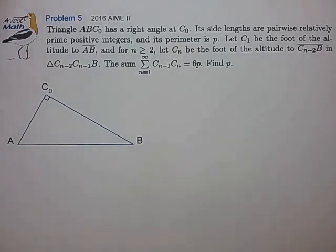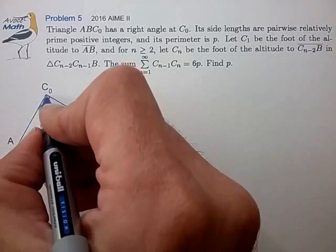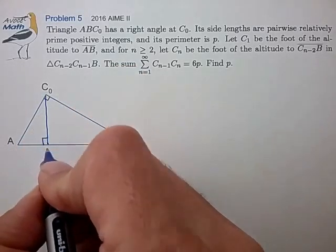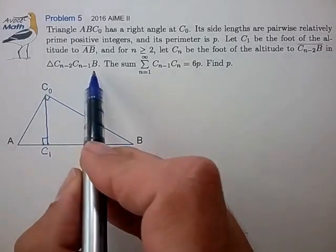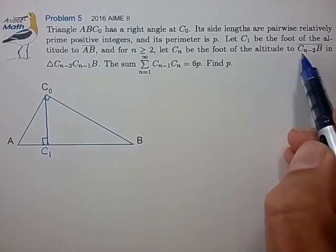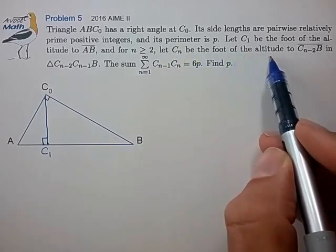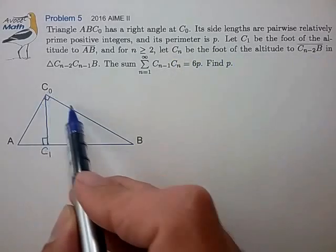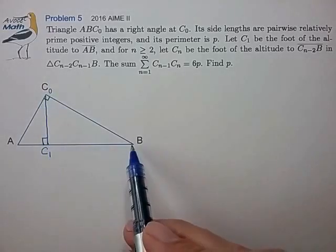So there are a few things to unpack in this problem, and the first is to just try to figure out what these line segments are. C1 is pretty easy to see - it's the foot of the altitude to side AB. Let's draw that in. Now C2 is a bit harder. This expression is a bit complicated, so let's substitute n equals 2 into this expression. So then C2 is the foot of the altitude to C0B in triangle C0, C1, B.